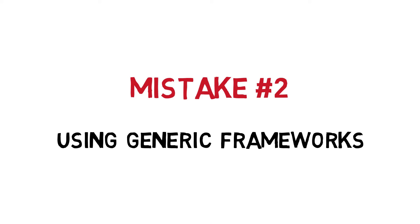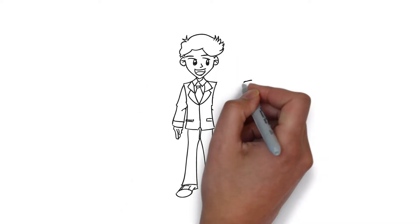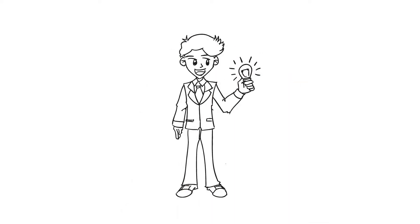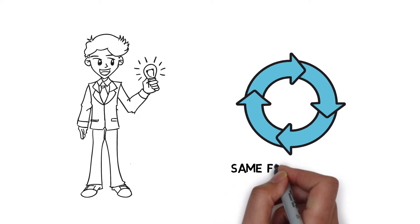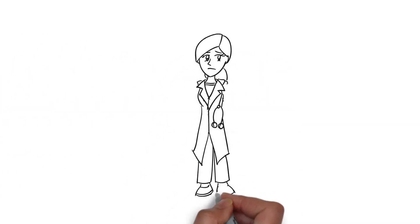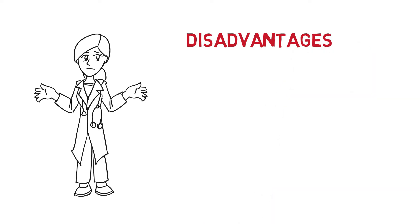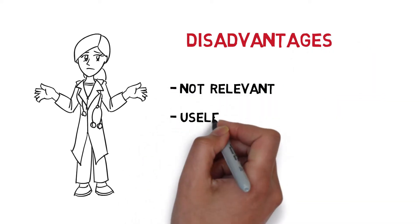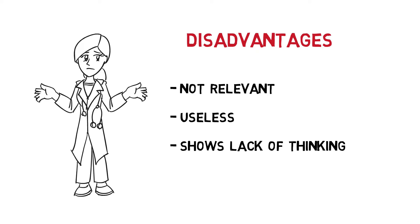Mistake number 2: using generic frameworks that don't fit the case situation. Most candidates come into the interview with a single pre-memorized framework, or multiple pre-memorized frameworks, and use them for every single case interview regardless of the business problem given. The issue is that these frameworks cannot be used for every situation. There will be times when you get a case with an unusual or weird business situation. If you use the same frameworks, the elements will likely not be relevant, and interviewers will easily be able to tell that you are regurgitating memorized information rather than thinking critically for yourself.